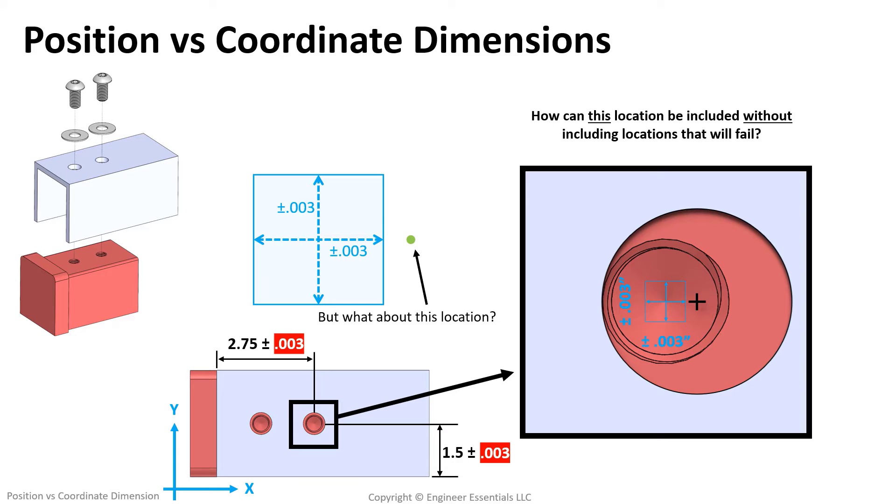So how do we include this deviation in X and Y, without including deviations in X and Y that we don't want? That's exactly where GD&T control of position comes into effect. In fact, this exact reason is why GD&T was invented as a concept.